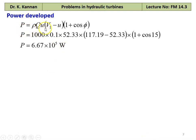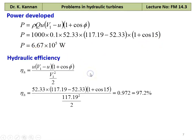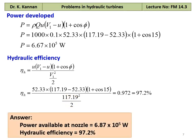Power developed by the runner: P = ρQ × U × (V1 − U) × (1 + cos φ) = 1000 × 0.1 × 52.33 × (117.19 − 52.33) × (1 + cos 15°). Hydraulic efficiency = power developed / power at nozzle = 0.972 = 97.2%. Answer: Power available at nozzle = 6.871 × 10⁵ W; hydraulic efficiency = 97.2%.